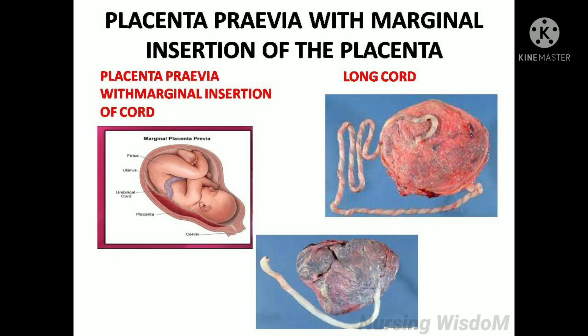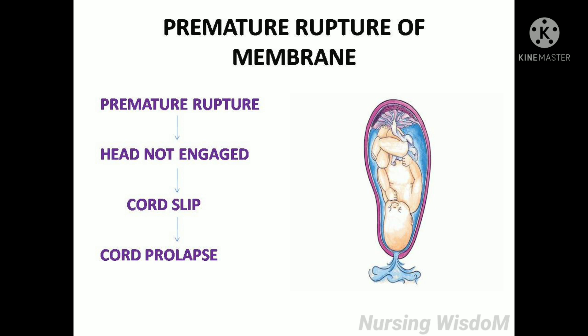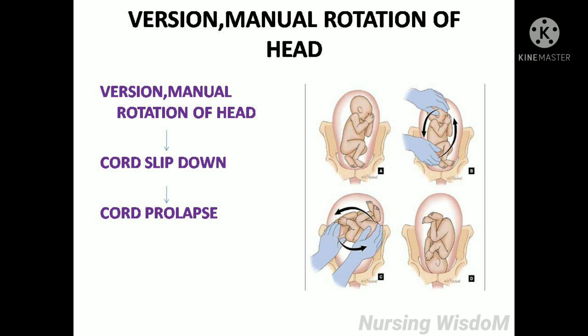Placenta previa with marginal insertion of the placenta — placenta previa means low-lying placenta, and marginal insertion of the cord means the umbilical cord is attached at the margin of the placenta. A long cord also increases the risk of cord slippage leading to cord prolapse. Premature rupture of membranes means the membrane ruptures before the head is engaged, causing cord slippage. Version and manual rotation of the head, used to correct malpresentation, increase the chance of slipping down of the cord and lead to cord prolapse.